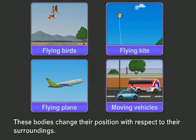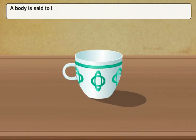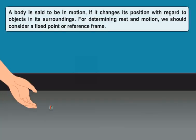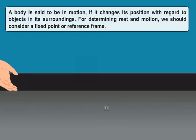Students, a body is said to be at rest if it does not change its position with respect to other objects in its surrounding. And a body is said to be in motion if it changes its position with regard to objects in its surroundings.